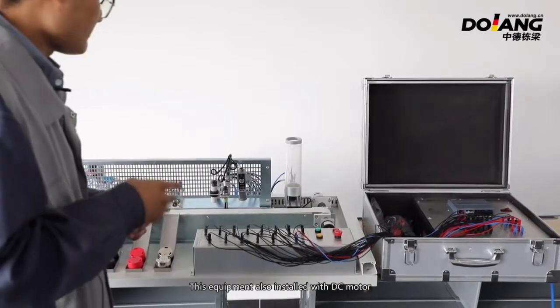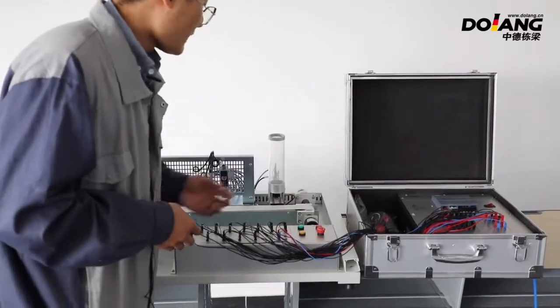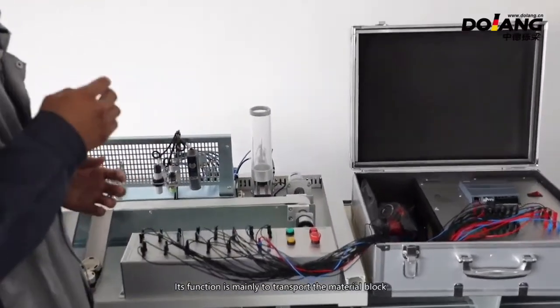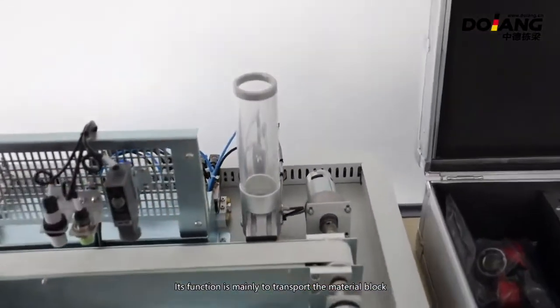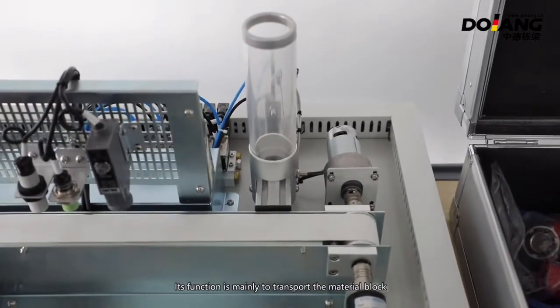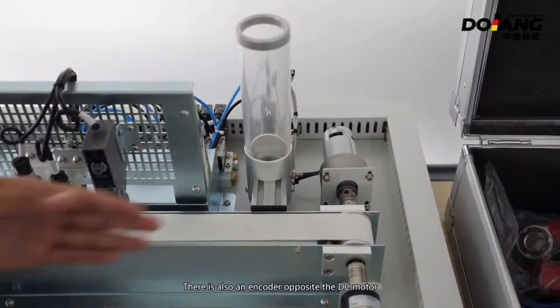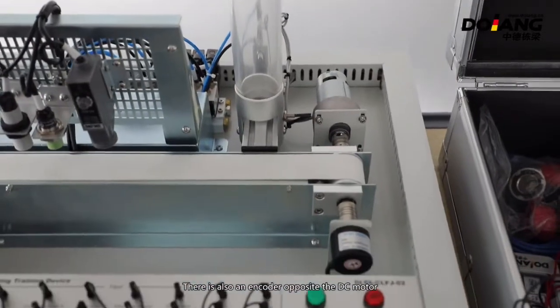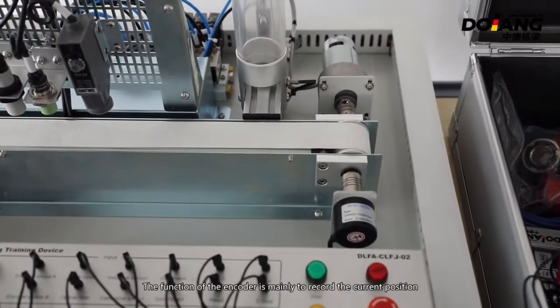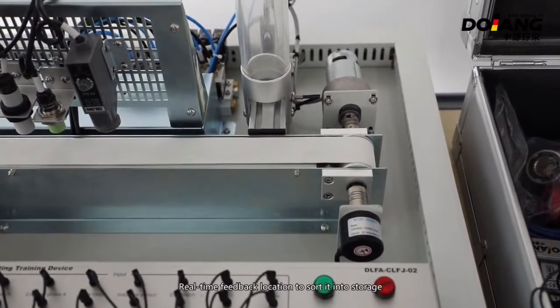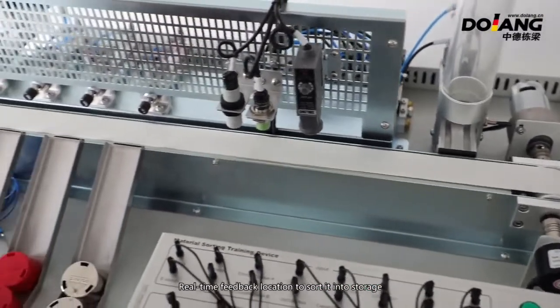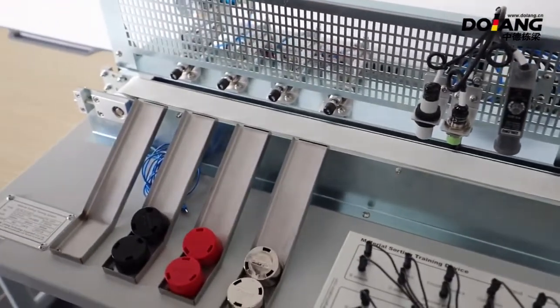This equipment is also installed with a DC motor. Its function is mainly to transport the material blocks. There is also an encoder beside the DC motor. The function of the encoder is mainly to record the current position and provide real-time feedback location to slot it into storage.